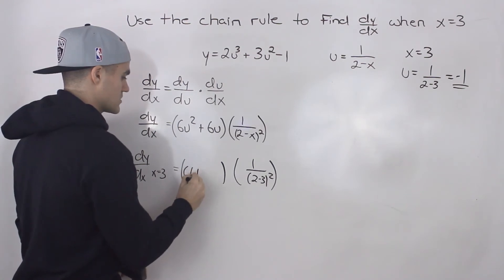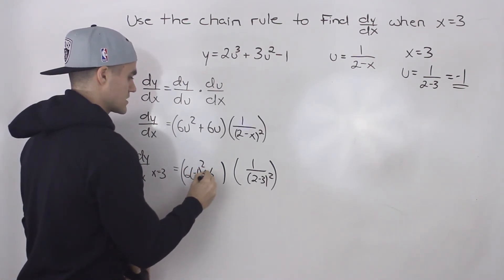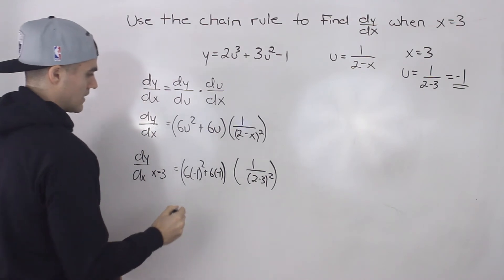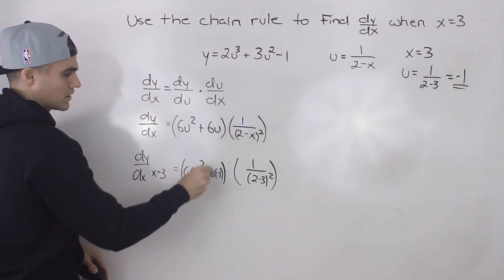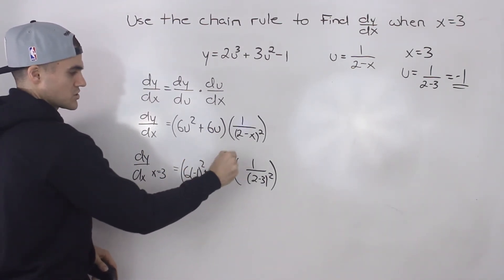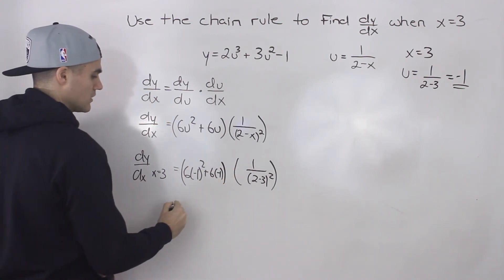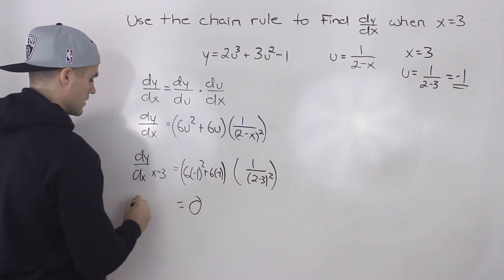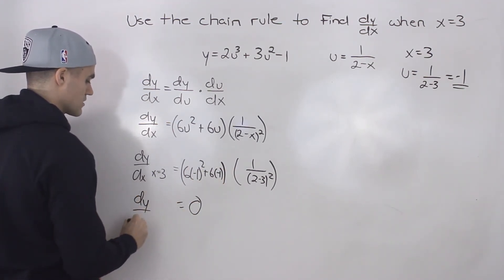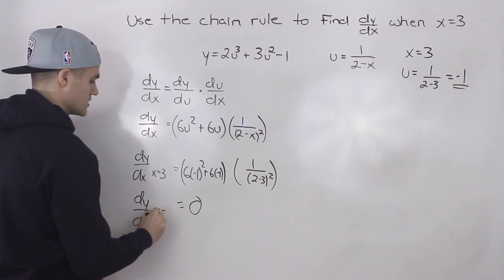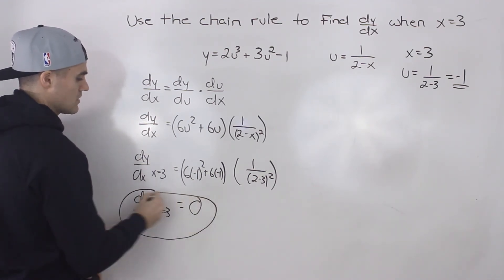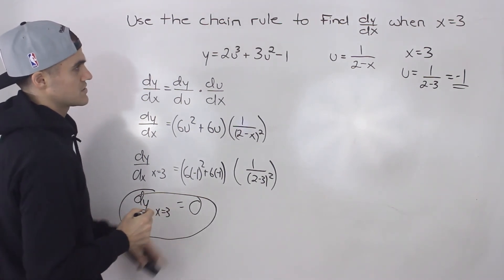So we'd have 6 times negative 1 squared plus 6 times negative 1. And then notice that this bracket here will become 0. This bracket would just be 1 and then 0 times 1 is just 0. So that is the answer to this question, dy/dx when x is equal to 3, the derivative is equal to 0.